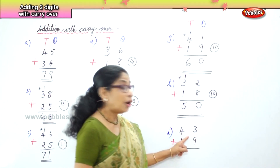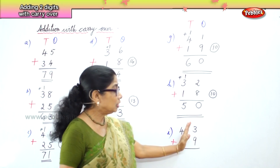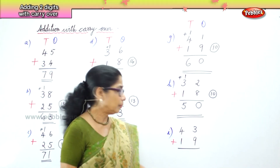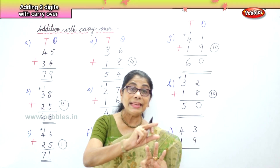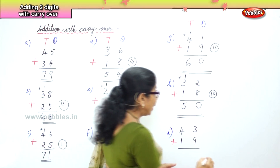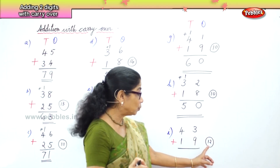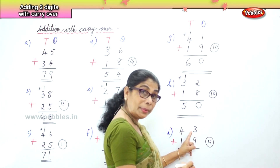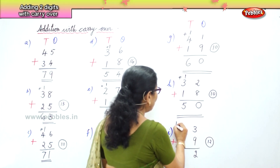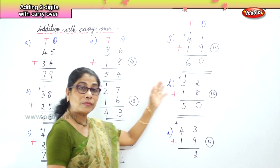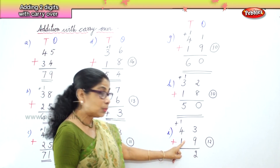The next sum: forty-three plus nineteen. Four tens, three ones, plus one ten and nine ones. Look at the ones place: three ones and nine ones. Nine in the mind, three in the fingers — after nine: ten, eleven, twelve. Nine plus three is twelve. Write it to the side with a circle. Twelve ones is one ten and two ones. Put two ones in the ones place, carry over the one ten to the tens place. One ten plus four tens makes five tens, five tens plus one ten makes six tens. So we have sixty-two.